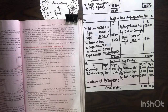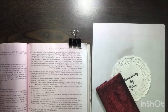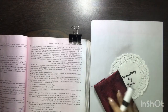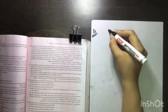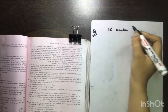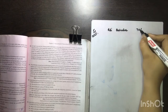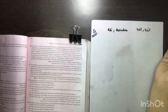Now we will do another question. Now our next question is question number 51. So we start with question number 51. As per this question, Ali and Bahadur are the two partners. Their share is 70-30% — Ali's 70 and Bahadur's 30.